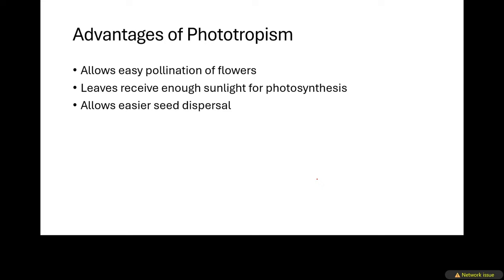There are three advantages. First, phototropism allows easy pollination of flowers. When the plant bends towards the light, the flowers become more easily exposed for pollination. Remember that pollination occurs at the flowers, so if the plant bends toward the light, it becomes easier for pollinators to pollinate those flowers.